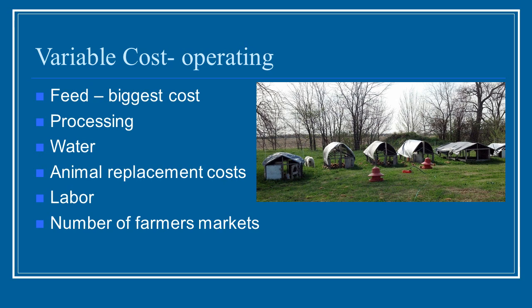Variable costs are considered your operating costs — the things that are going to change depending on how many animals you do. Feed, of course, is a big difference between if you have five laying hens or 250 laying hens. Your processing fees will be different depending on how many animals you have. Water — even if you have a well, you still need to think about your electricity costs for your pump. Animal replacement costs: if you lose some animals from disease, how much will it cost to replace those?